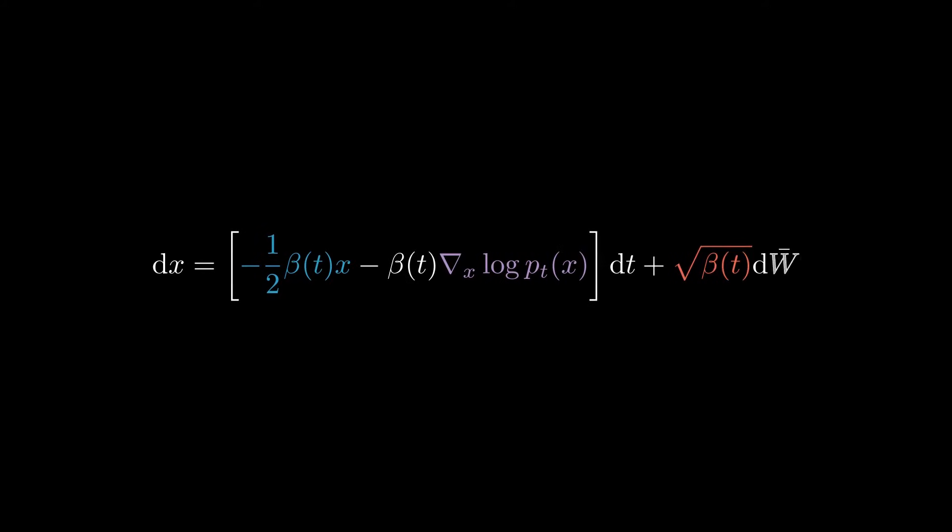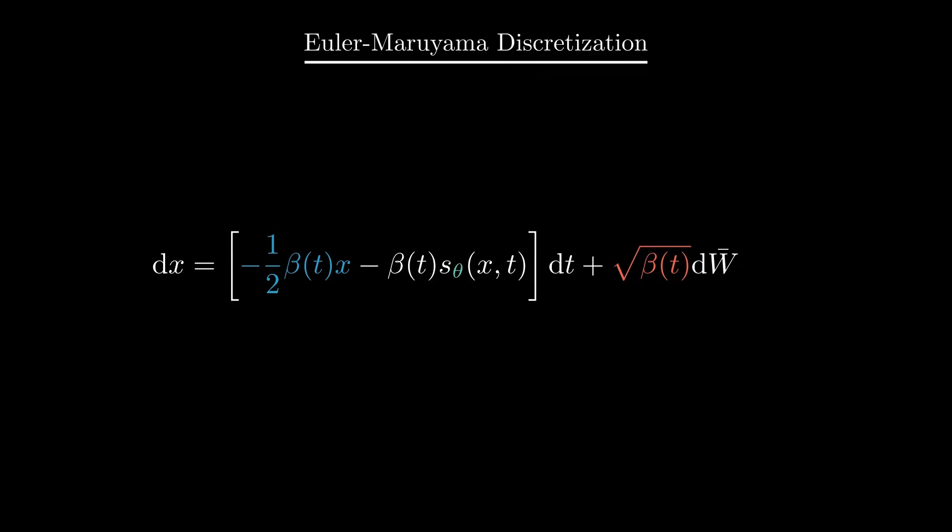Alright, so we have this beautiful SDE where we can now plug the neural network we previously trained to approximate the score functions. If we want to actually use this continuous time equation to generate samples, we need to discretize it. Now, there are many, many ways to discretize an SDE. It's an entire research field on its own. So for now, we'll stick with the simplest and most commonly used method, which is called the Euler-Maruyama discretization. Don't worry, this is just a fancy name for a very simple way of discretizing this equation.